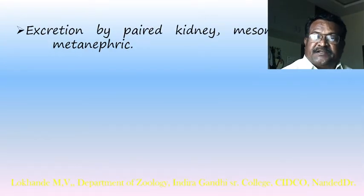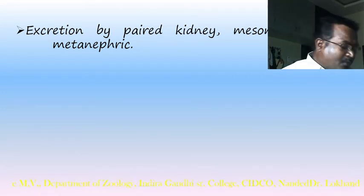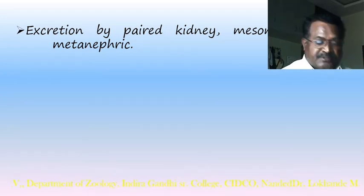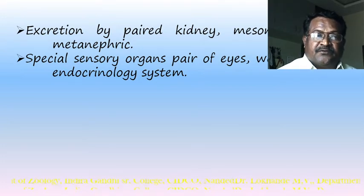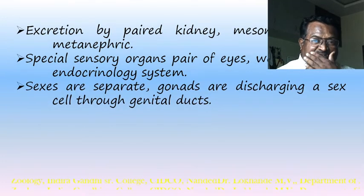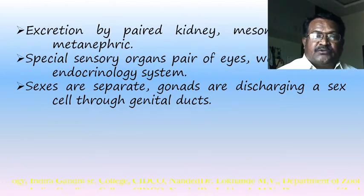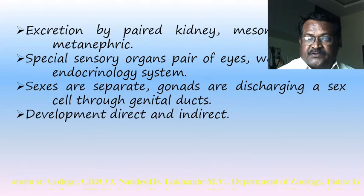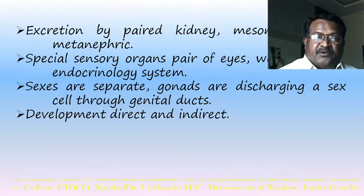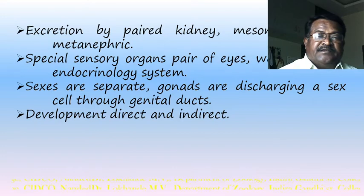Excretion occurs through paired kidneys of the mesonephric and metanephric type; pronephric and archinephric kidneys are absent in vertebrates. Well-developed sensory organs and endocrine glands are present. Sexes are separate; male and female gametes unite to form a zygote, and development may be direct or indirect.